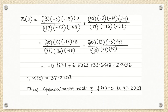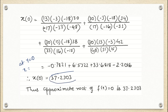Do the calculation using a calculator and you get x ≈ 37.2303. That means at y = 0, x is 37.2303. This value satisfies the given equation, so the appropriate root of f(x) = 0 is 37.2303.